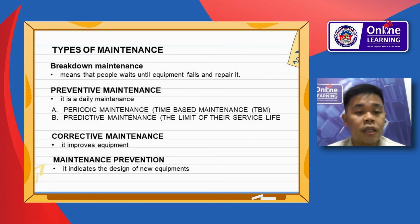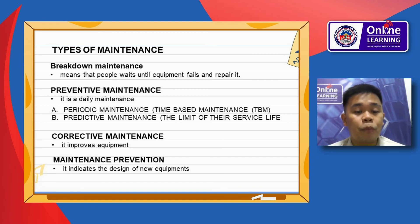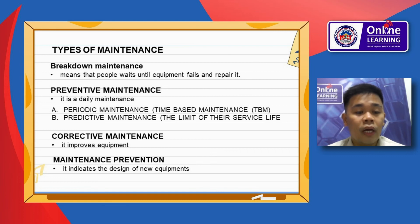Types of maintenance include: Breakdown maintenance, where people wait until equipment fails and then repair it; Preventive maintenance, which is direct daily maintenance; Periodic maintenance, which is time-based maintenance; Predictive maintenance, based on the limit of service life; Corrective maintenance, which improves equipment; and Maintenance prevention, which focuses on the design of new equipment.